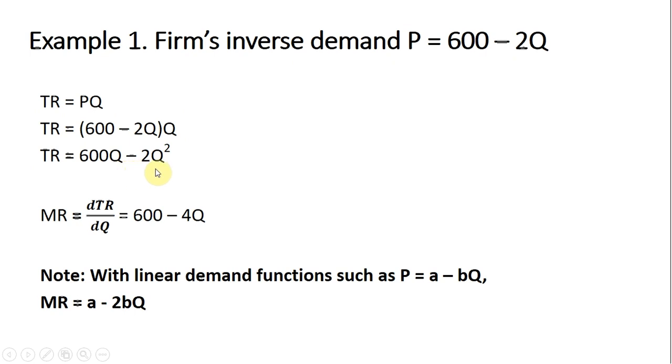Taking the derivative of that gives us marginal revenue. So following our rules of differentiation, the derivative of 600Q is 600. The derivative of minus 2Q squared is, bring down the two in front, so we're going to get minus 4. And then 2 subtracting 1 from that leaves us Q raised to the power of 1. So marginal revenue is just 600 minus 4Q.